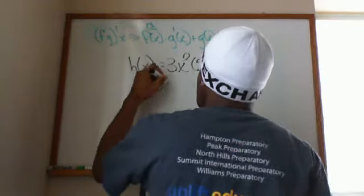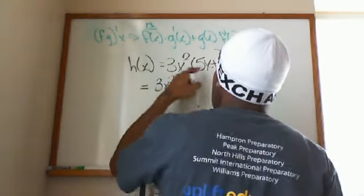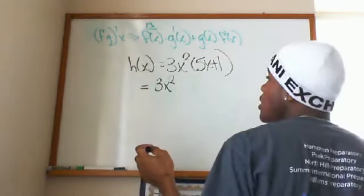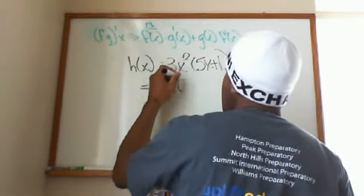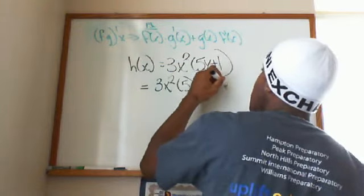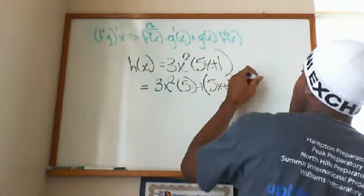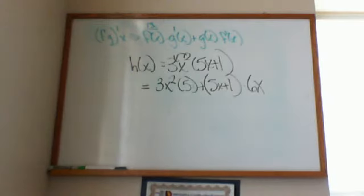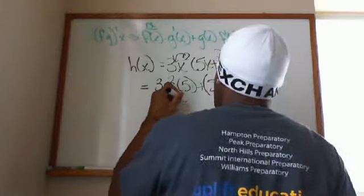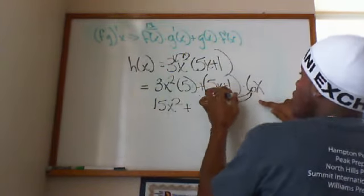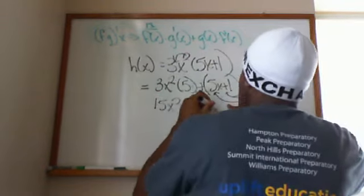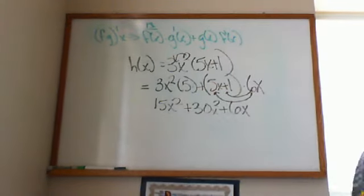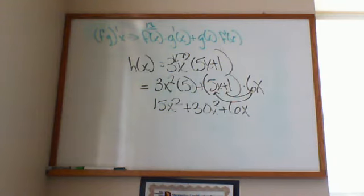Times the derivative of the second, which is gonna be 5. Because the derivative of a constant is what again? Zero. Absolutely. So 3x squared times 5 plus 5x plus 1, the second, times derivative of the first, which is 6x, because you did 2 times 3x to the 2 minus 1 and you got 6x here. I then simplify my problem and I get 15x squared plus—I distribute using my distribution property here—and I get 30x squared plus 6x.